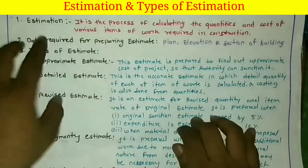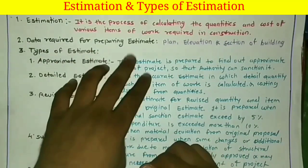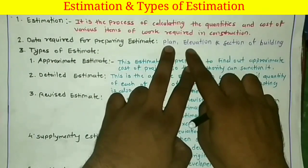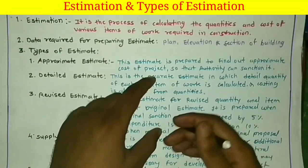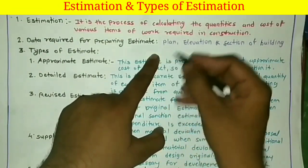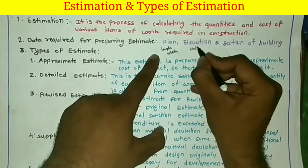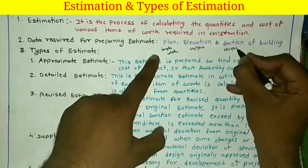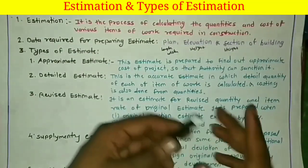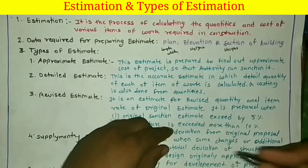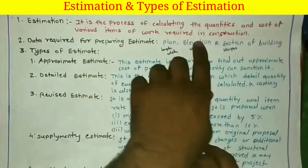What data is required for preparing an estimate? If you want to prepare an estimate, you require the plan, elevation, and section of that construction work. From the plan you can get the length and width. The elevation and section will provide you the height and how the structure looks. In estimation, we generally multiply length, width, and height to get the quantity in cubic meters. So we just require plan, elevation, and section for preparing the estimate of any building.